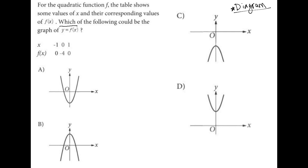So y equals f of x means that I can cross this f of x out and replace it with y. In doing so I am finding x y values here or coordinate pairs from this table. So in essence what I'm told from this first column is that I have the point negative 1 comma 0. The second column tells me I have the point 0 comma negative 4 and the third column tells me that I have the point 1 comma 0.